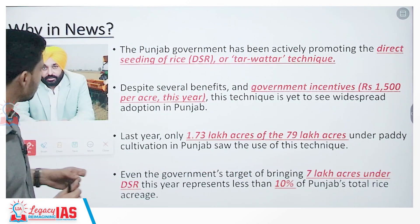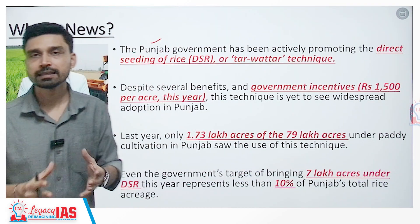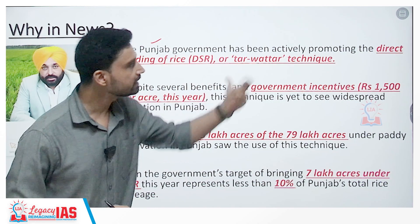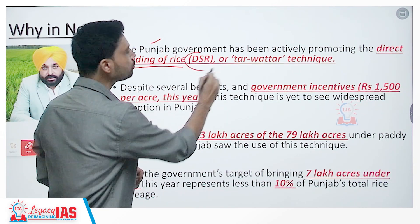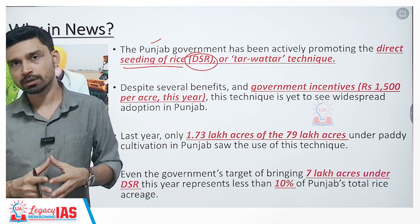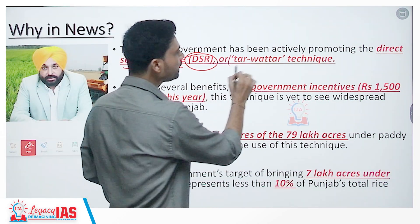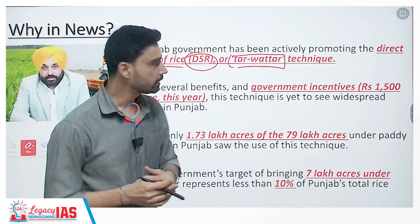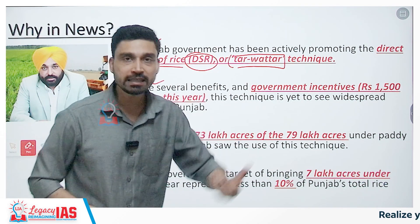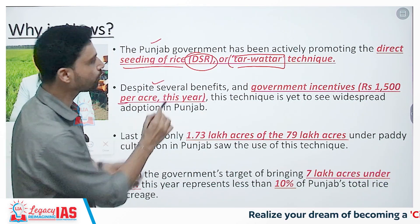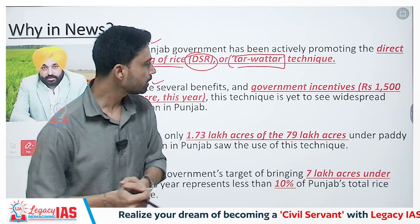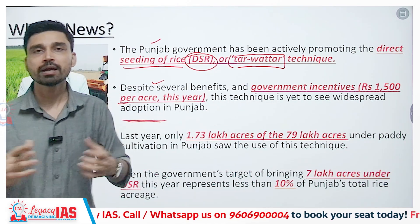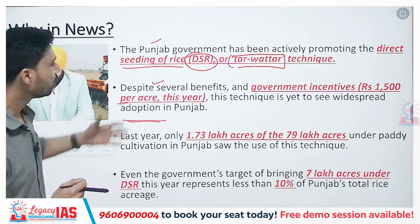Punjab is one of the lead producers of rice in India and has actively promoted direct seeding of rice, also commonly known as the DSR method or locally called the tar vattar technique. Despite several benefits, the government is also providing incentives to farmers — as high as rupees 1500 per acre. Yet the technique is yet to see widespread adoption among the rice cultivators of Punjab.